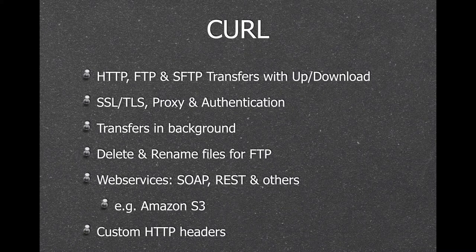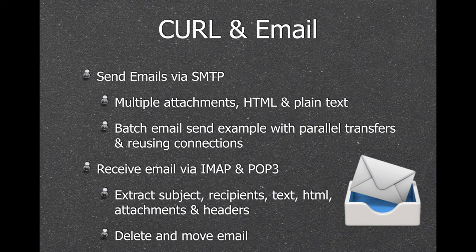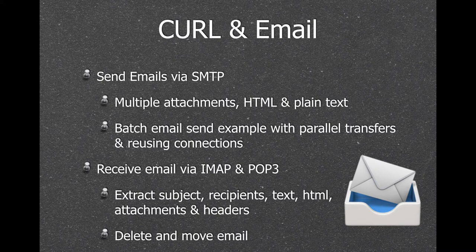You can include custom HTTP headers in your requests, which is very handy for various web services to pass authentication tokens. We can send emails via SMTP with multiple attachments, HTML text and plain text. You can even include inline graphics in your HTML email and include the graphics as a separate attachment. We have an example for batch sending emails which can send emails faster than usual in FileMaker by using parallel transfers and reusing connections. We can also receive emails via IMAP and POP3 — you can download an email, extract the subject, recipients and content, then delete or move the email to the right folder. This way you can automatically process emails you receive regularly and import all the content into your database.